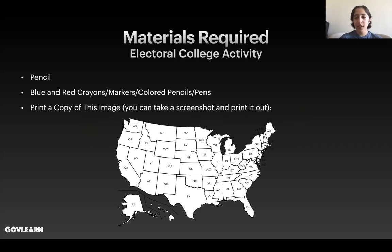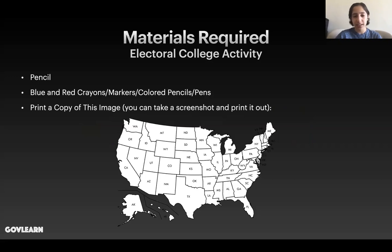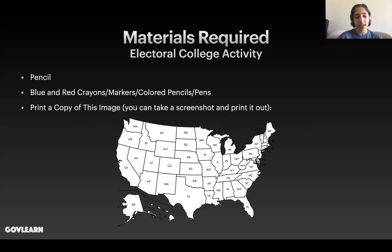The materials you're going to need for our activity at the end are a pencil or pen, as well as blue and red crayons, markers, colored pencils, or pens, or any sort of writing implement that are blue and red. You will also need a printer to print a copy of this image here of the United States. You will need to take a screenshot and print it out, and then you're going to shade those in later, but we'll get to that at the end.